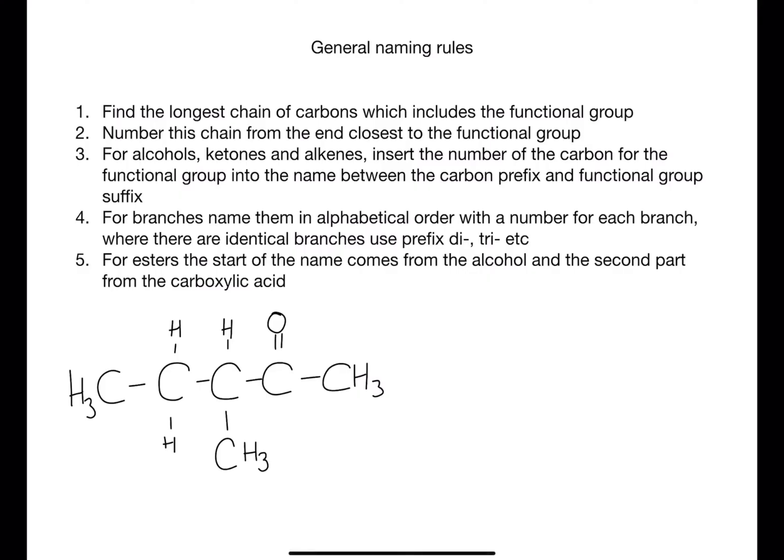Hi and welcome back to my channel. Today we're going to be looking at naming and drawing organic molecules for practice. Here are the general naming rules. First of all, find the longest chain of carbons which includes the functional group. Number this chain from the end closest to the functional group. For functional groups such as alcohols, ketones, and alkenes, the number of the carbon for the functional group is put into the name between the carbon prefix and the functional group suffix.